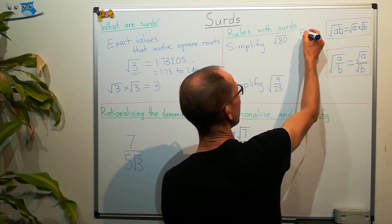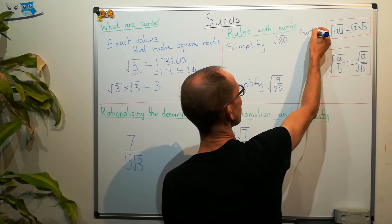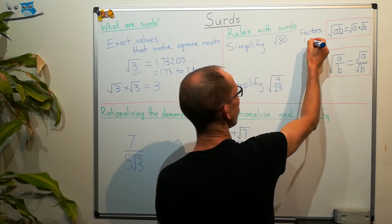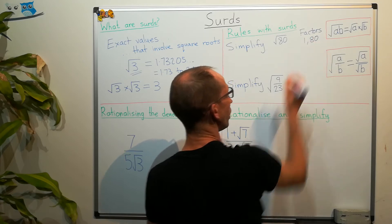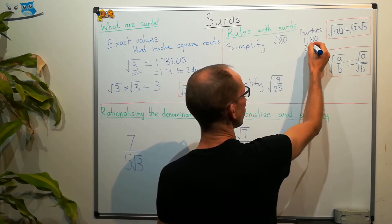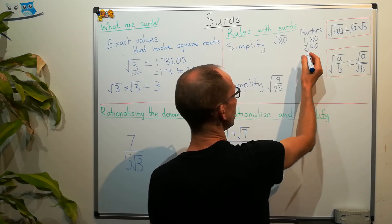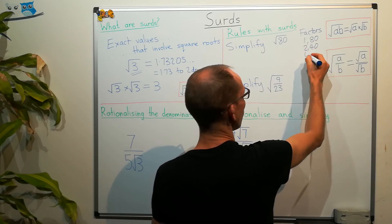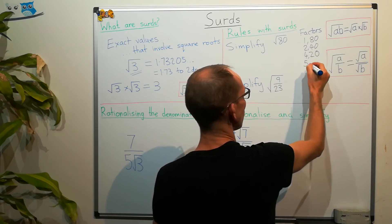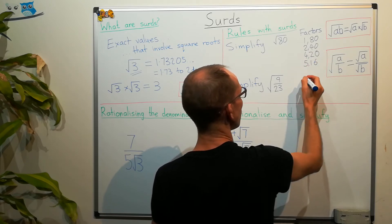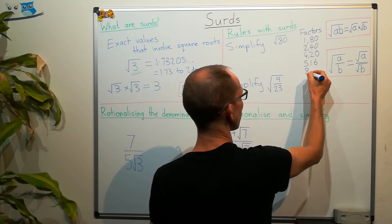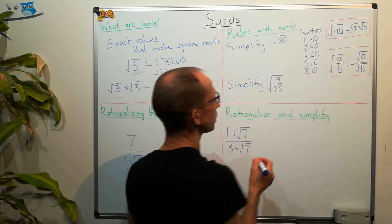So let's look at the factor pairs of 80. Well, we've got 1 and 80. 1 times 80 equals 80. We've got 2 and 40. 2 40s are 80. We've got 4 and 20. 5 and 16. 5 16s are 80. And we've also got 8 and 10.